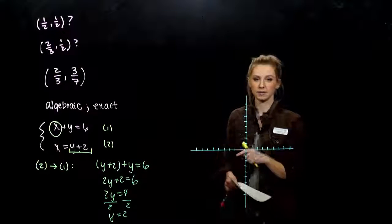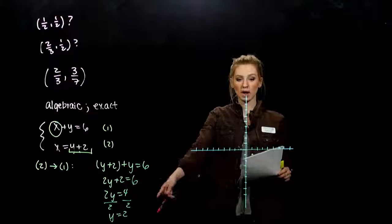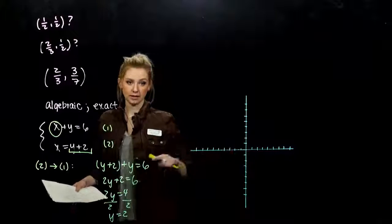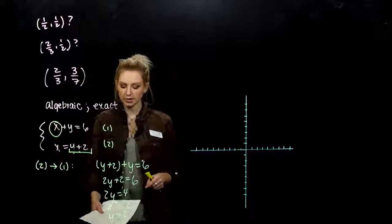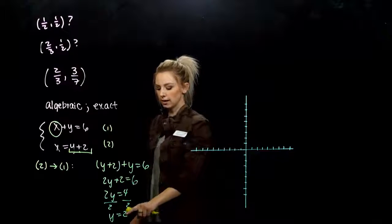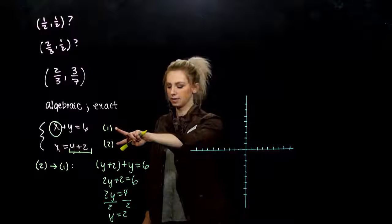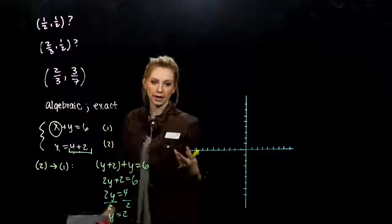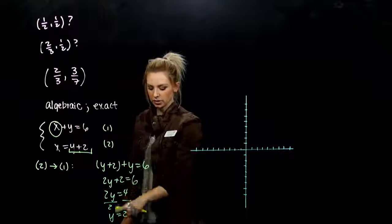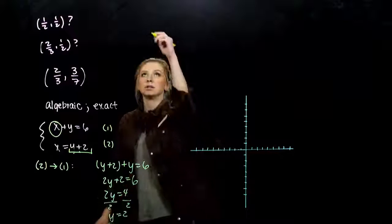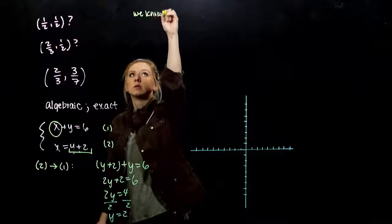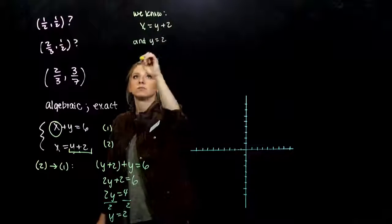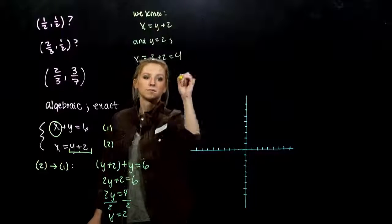But are we done? We figured out the y-coordinate, but we don't know the x-coordinate. Which equation is going to be easiest to solve for x? The second one, because it's already isolated. I know that x is y plus two, and I know y is equal to two. So x has to be four.